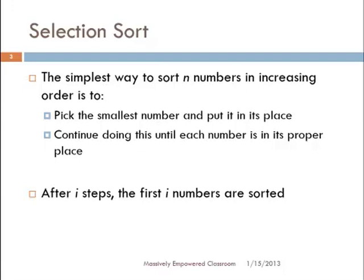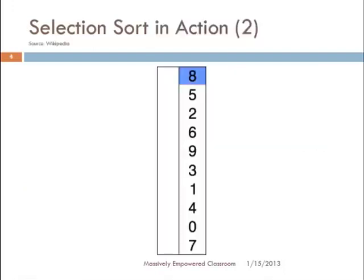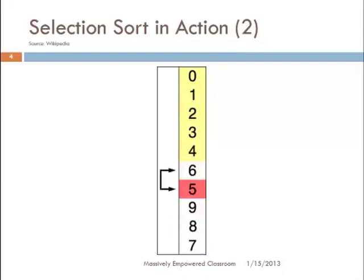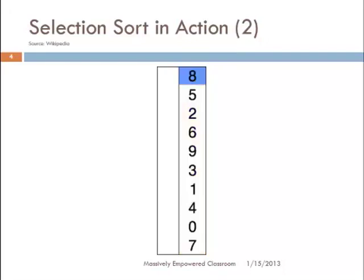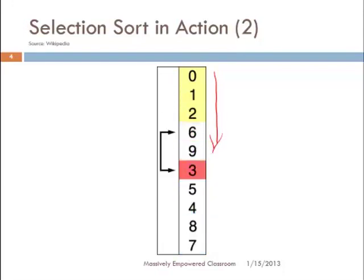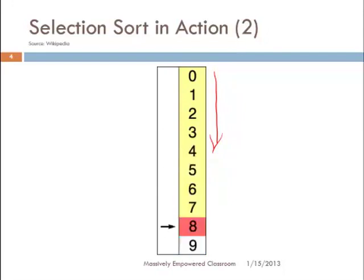In this simple animation, you will see an array. The elements which are already sorted are highlighted in yellow background, and the elements yet to be sorted are in white background. The elements are getting sorted from the top of the array towards the bottom. First it finds the smallest number, which is zero, and puts it in the first place at the top of the array. Then it finds the next smallest number, which was one, and puts it in the second place, and so on.